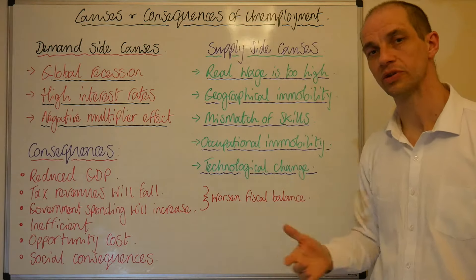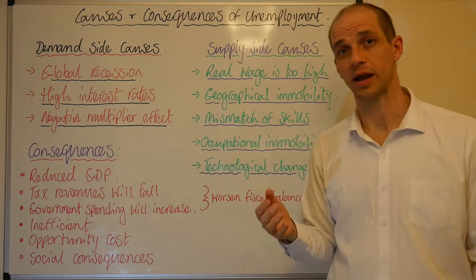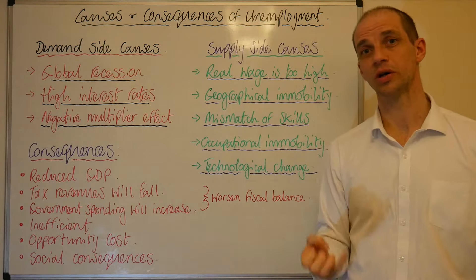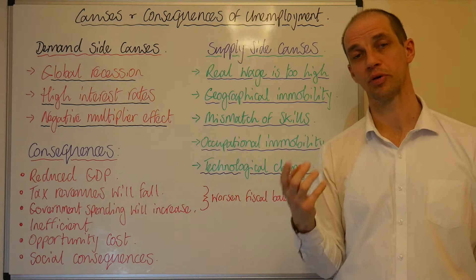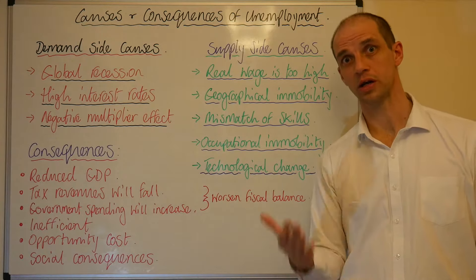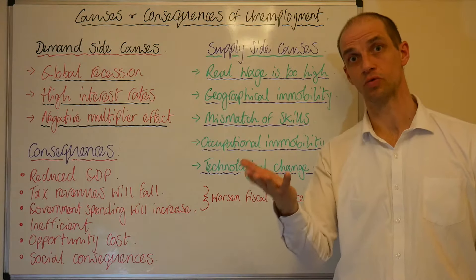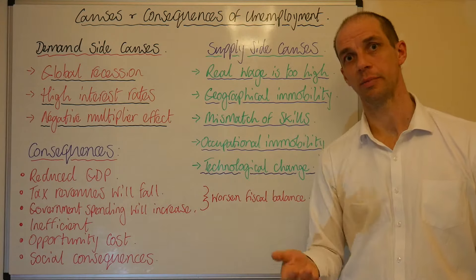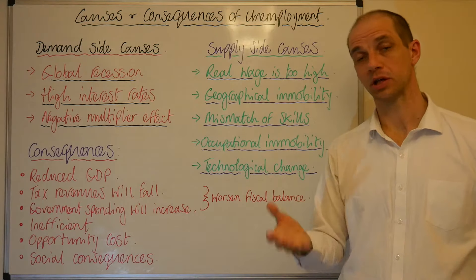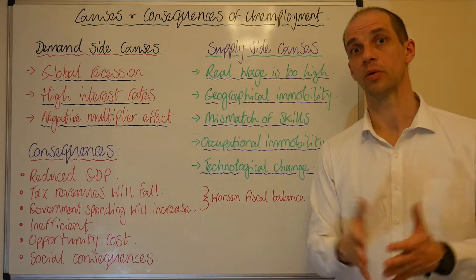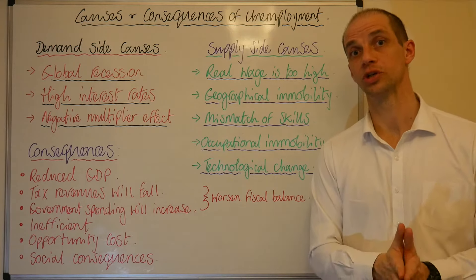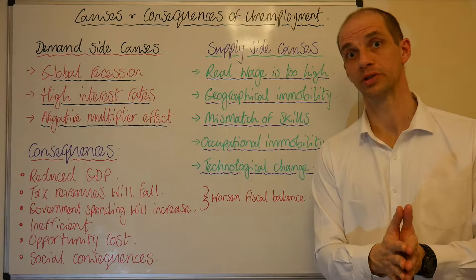Moving to the supply side areas, the first is that real wages are too high. We've previously discussed whether trade unions can bargain up the wage rate to command a much higher wage, and that can, of course, increase unemployment.